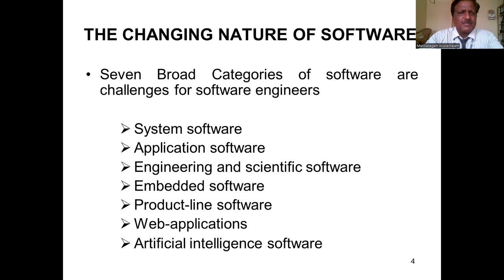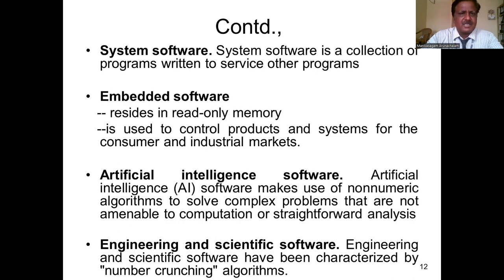Software may be classified into various categories: system software, application software, engineering and scientific software, embedded software, product line software, web applications, and artificial intelligence software. System software is a collection of programs written to service other programs.